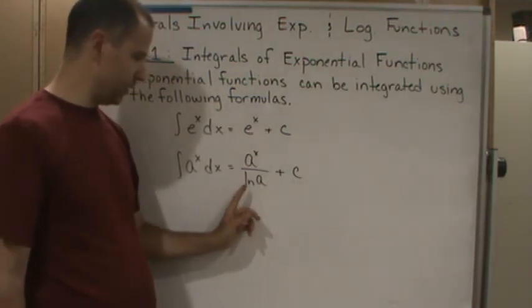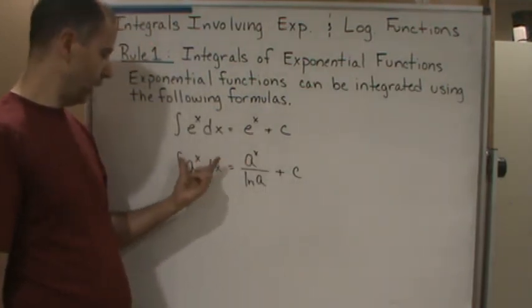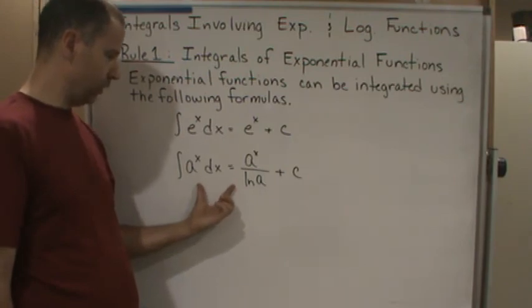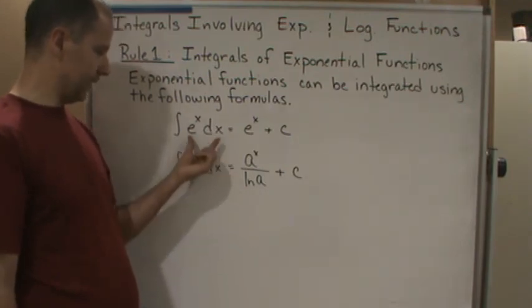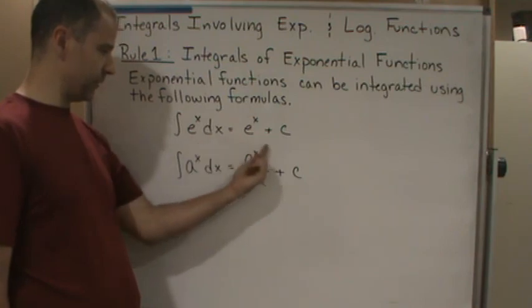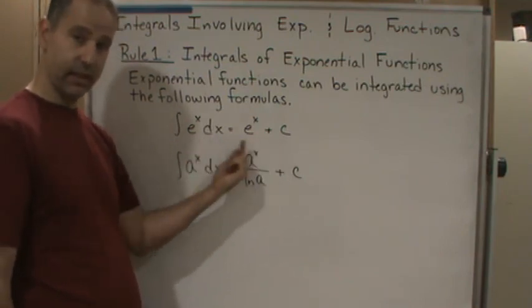So this just becomes one, so you still get e to the x. So this general formula works even for e to the x, but again, specific for e to the x, it's just this.